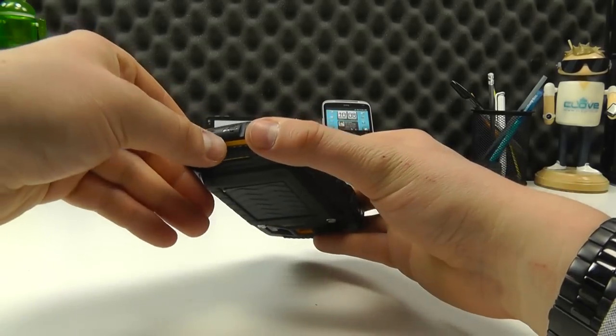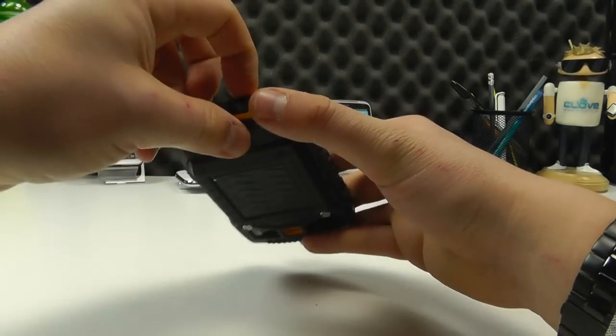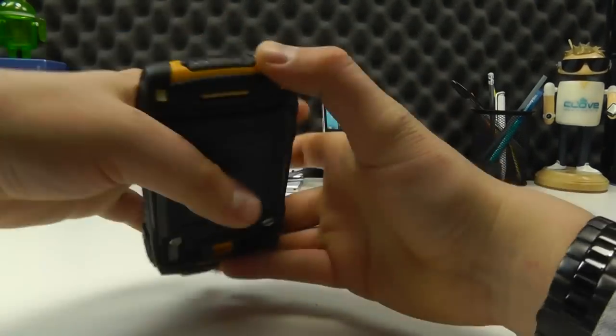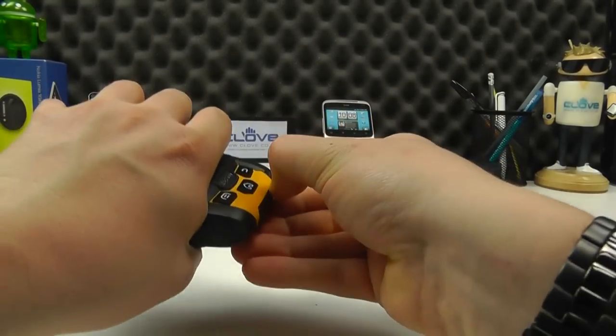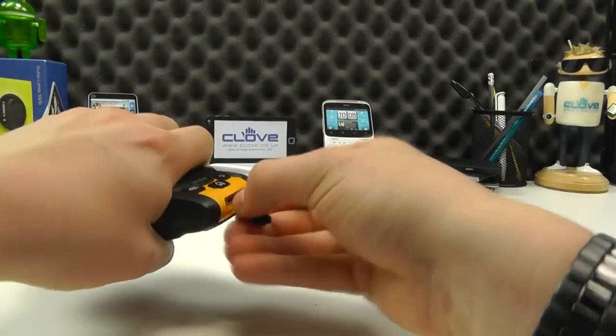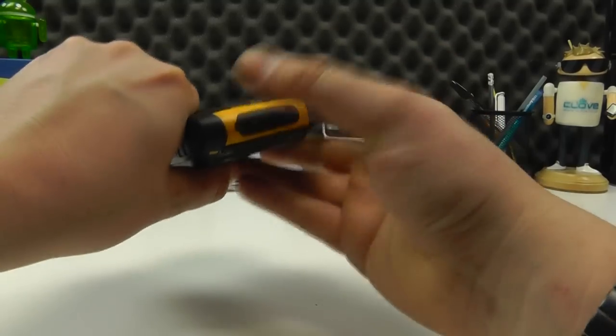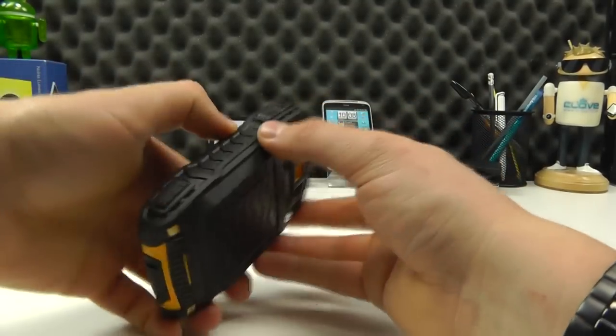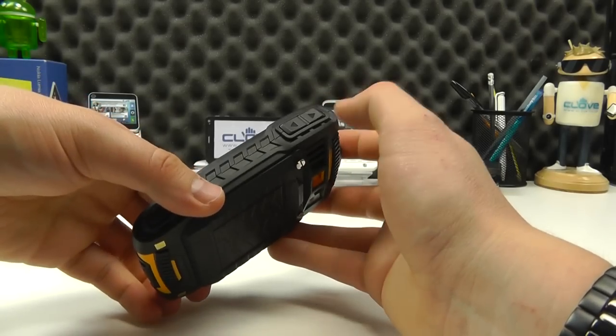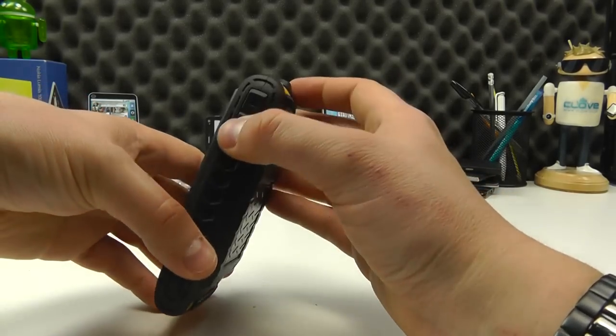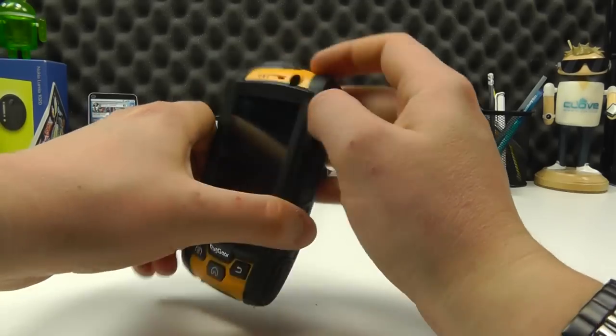On the bottom, we've got the USB and headphone jack here. Now, you do need nails to open this up because it's designed to keep the IP rating. There we go. Headphone jack and micro USB connection for charging the device. And then on the right side, we've got another function button, the volume keys up and down, power button on the top there.